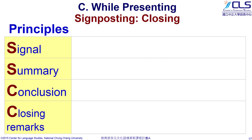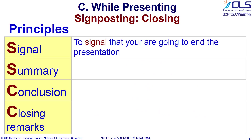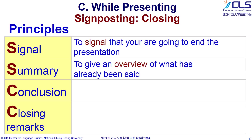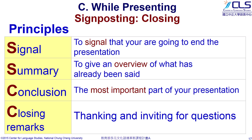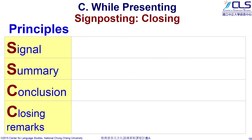In the closing part, here are some principles to help you organize your ideas. Signal means indicating that you are going to end the presentation. Summary means giving an overview of what has already been said. The conclusion is the most important part. And finally, you need to invite questions — this is called closing remarks. So the closing part includes: signal, summary, conclusion, and closing remarks.